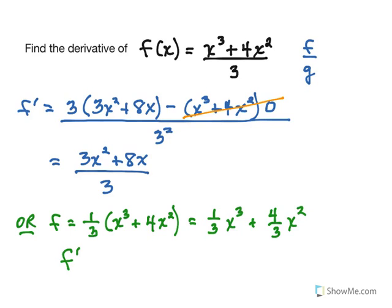So if we go and find our derivative, it's really now just a power rule problem. So we have one third times 3, so that's of course 1, x squared plus, we have 8 thirds x, and you're done.